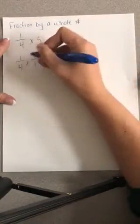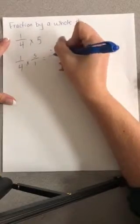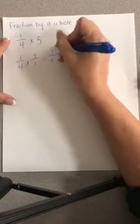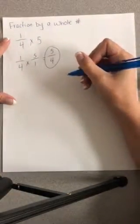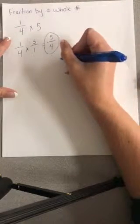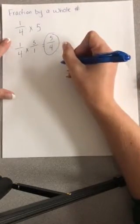Now just multiply by normal. So 1 times 5 is going to give me 5, and 4 times 1 gives me 4. Now I end up with an improper fraction, so I need to figure that out.